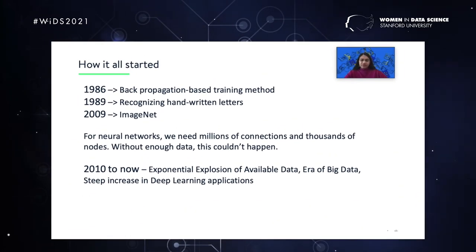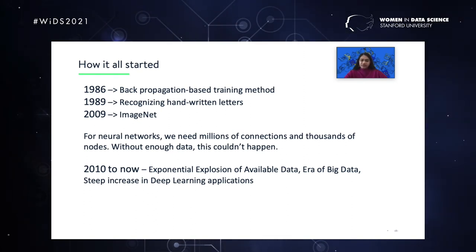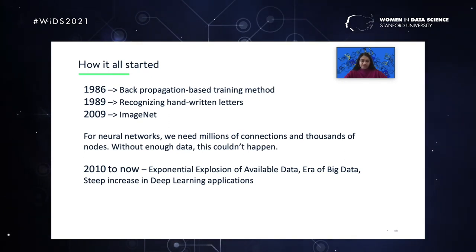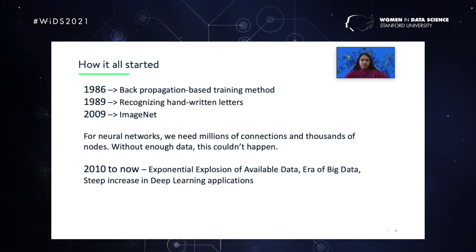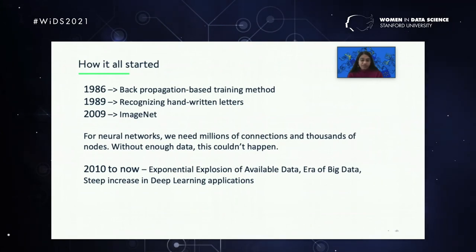Let's begin with how it all started. Back in 1986, a team of researchers came up with a learning algorithm based on backpropagation for a few layers. At that time, there wasn't much hype around the algorithm. Around 1989, it was applied in recognizing handwritten letters — that's where researchers saw some potential — but due to lack of big data, it wasn't as hot as it is now. Around 2009, ImageNet was published, and from then there was an exponential explosion of data, paving the way for the era of big data and deep learning. Without enough data, neural networks with millions of connections and thousands of nodes couldn't function. Now, pretty much every technology company processing big data is adapting to deep learning applications.